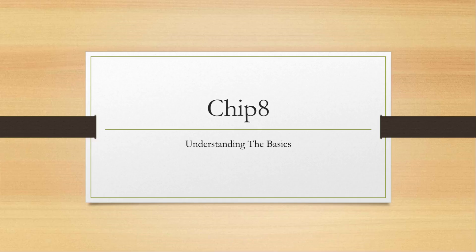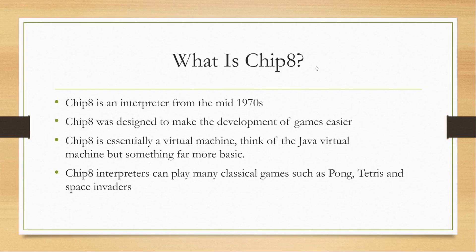Hello and welcome. In this lecture you are going to learn about the basics of the Chip 8. So what is the Chip 8? The Chip 8 is an interpreter from the mid-1970s. It was originally designed to make the development of games easier. Essentially Chip 8 is a virtual machine — think of the Java virtual machine of today but something far more basic. Chip 8 interpreters can play many classical games such as Pong, Tetris, and Space Invaders.